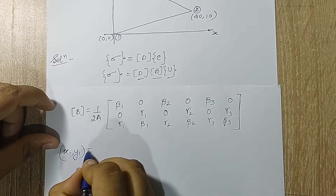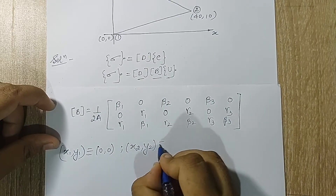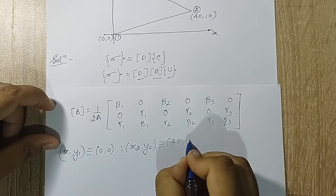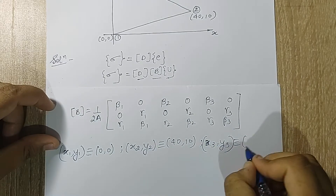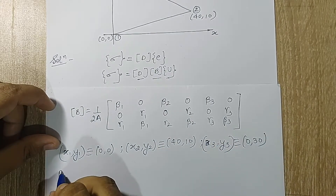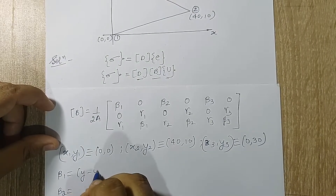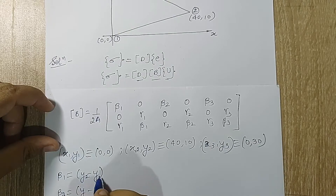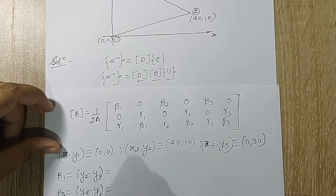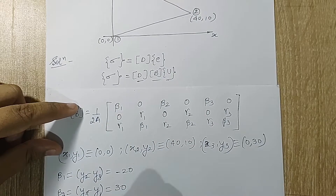The coordinates are: x1, y1 = 0, 0; x2, y2 = 40, 10; x3, y3 = 0, 30. Beta is the cyclic difference of y terms. Computing beta1, beta2, beta3 gives minus 20, 30, and minus 10.